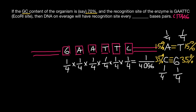Now let's redo our calculations. The probability that the first position is guanine is 35%, or 0.35. The probability that the second position is adenine is 15%, or 0.15. Similarly, the probabilities are 0.15, 0.15, 0.15, and 0.35 for the remaining positions. Multiplying all these probabilities together, we get 0.0000062.